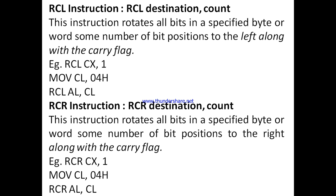Next are RCL and RCR — rotate with carry flag. RCL rotates left along with the carry flag, and RCR rotates right along with the carry flag. The RCL instruction rotates all bits in the specified byte or word some number of bit positions to the left, along with the carry flag.